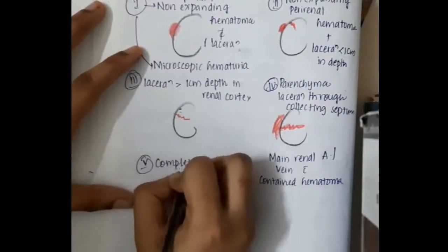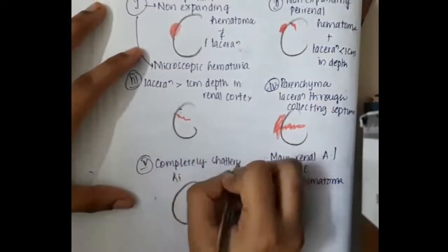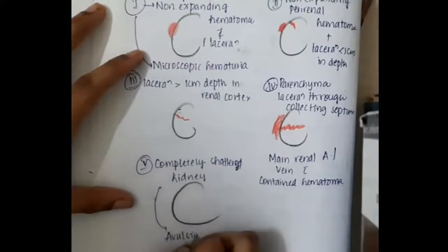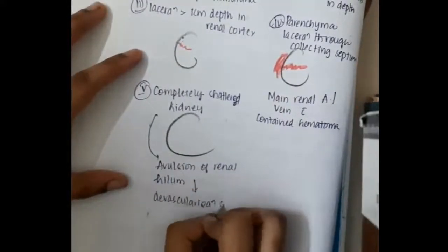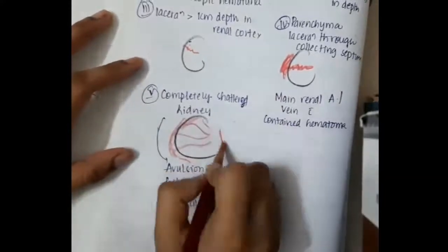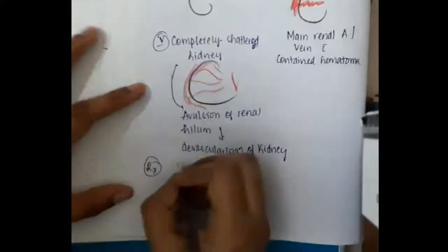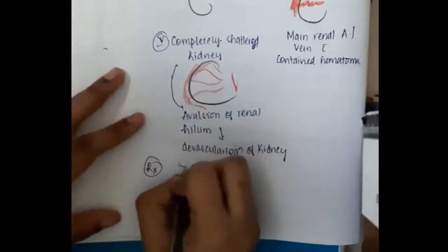Grade 5: In grade 5, there can be completely shattered kidney. This will cause avulsion of renal hilum completely and thus there is complete devascularization of kidney. Here there is complete avulsion of hilum leading to complete devascularization of kidney.